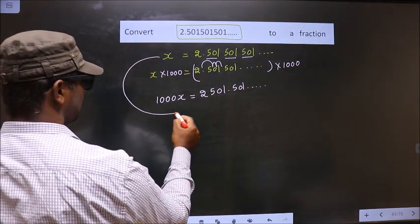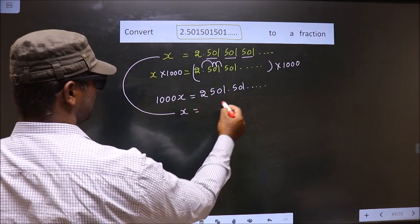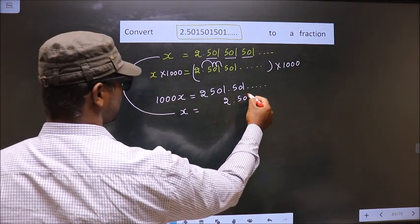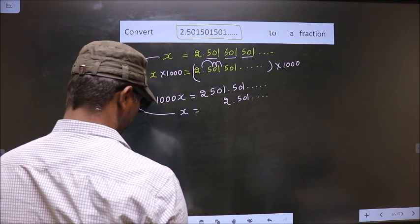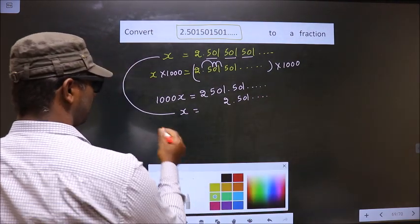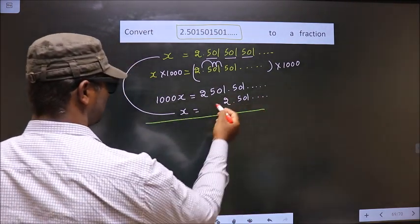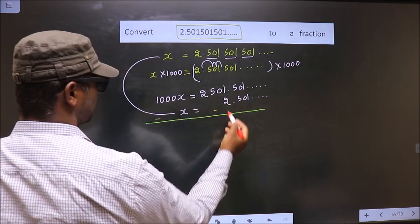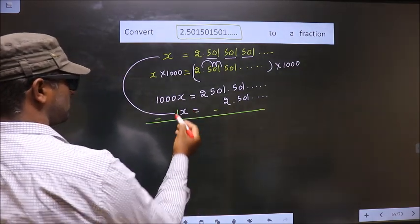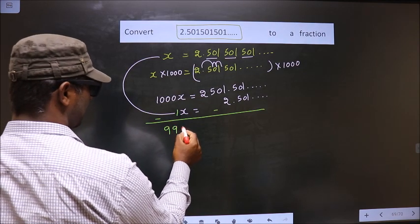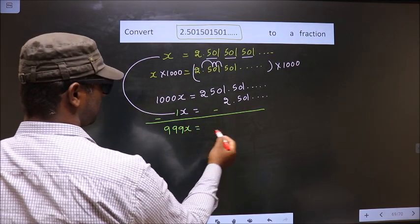Now I write this below this, that is x equals 2.501 and so on. Now we should subtract these two. That is minus here, minus here. So 1000x minus 1x is 999x equals...